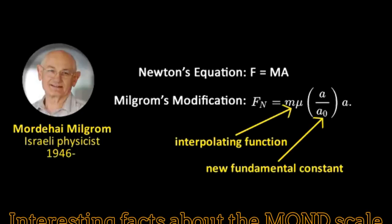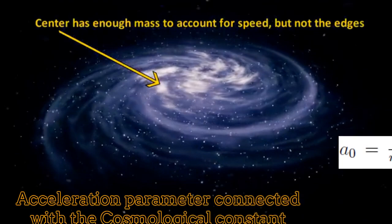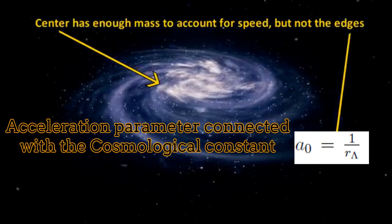There are two interesting facts about the Modified Newtonian Dynamics acceleration scale. The first one is that the acceleration scale is proportional to the inverse of the cosmological constant scale, given by the size of the observable universe.